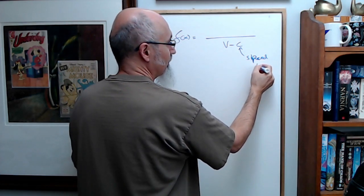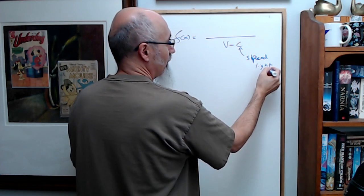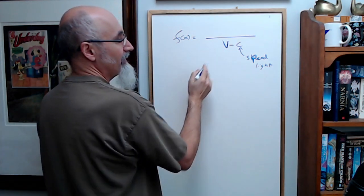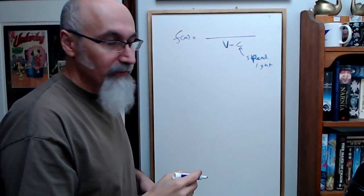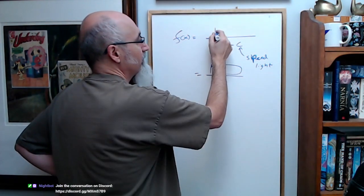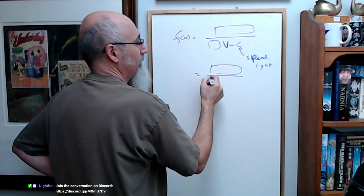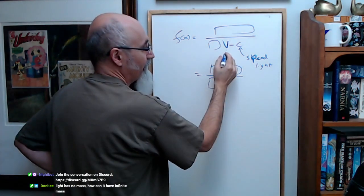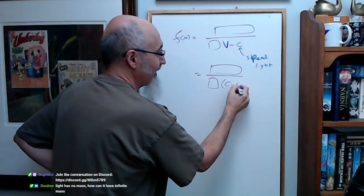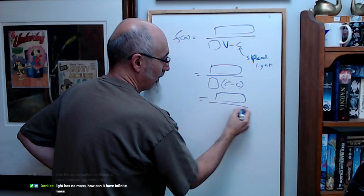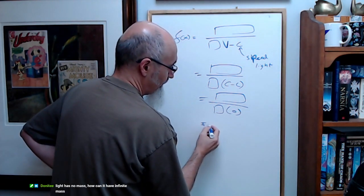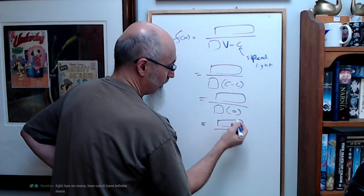If your velocity V is equal to the speed of light, you're gonna get whatever the rest of the variables are. There's a couple variables here. If your velocity is the same as speed of light, you're gonna get C minus C, which is gonna be that over zero.